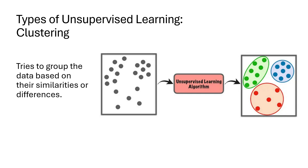There are three types of unsupervised learning. The first and most common one is clustering. Clustering tries to group the data based on similarities or dissimilarities. As you can see in this picture, we have data points, and with unsupervised models you group this same data into different portions based on properties — this part becomes the green round shape, this becomes the blue, and these ones become the red group.